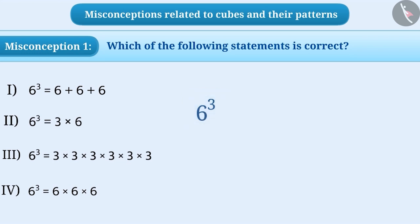For example, some children think that the cube of a number means adding that number three times. But this is a misunderstanding. The answer given with this understanding is option 1. This is an incorrect answer.